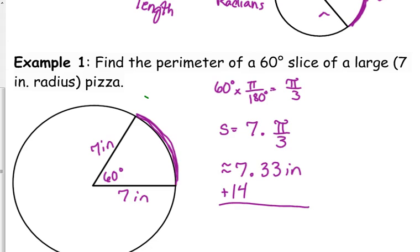Okay, we need to add 14 to that, because that's just the length of the crust. We need to add the length of the sides. So 21.33 inches is the perimeter of our pizza slice.